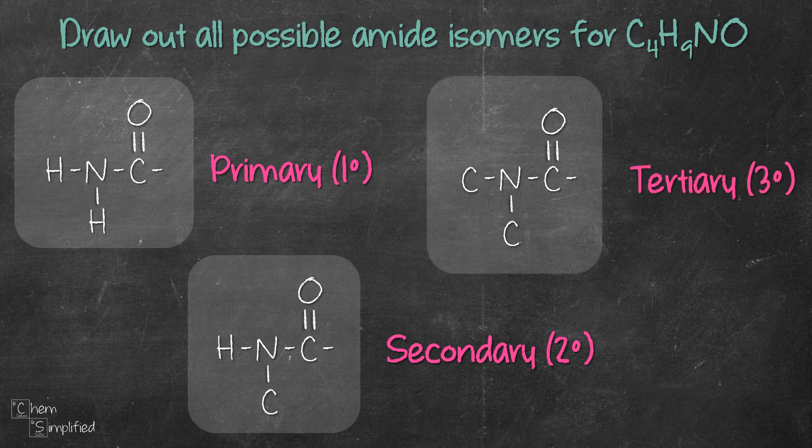In order to make sure that we draw out all possible amide isomers, let's approach this in a systematic manner. We'll start by drawing out all possible primary amides first, followed by secondary, and then lastly the tertiary amides.